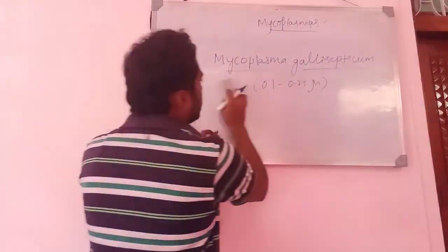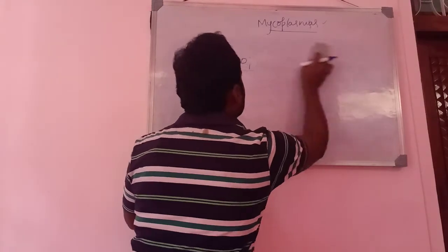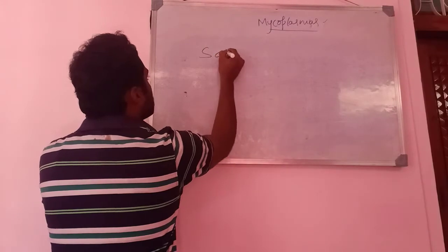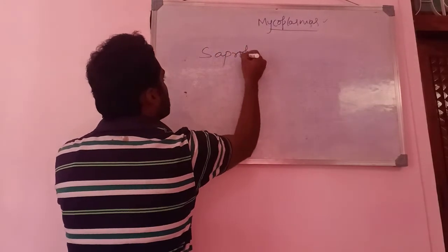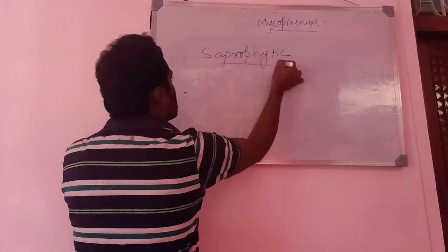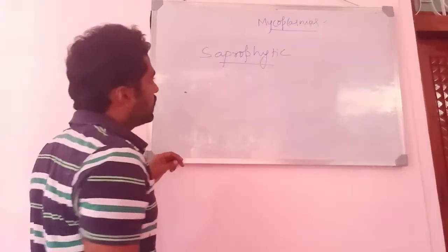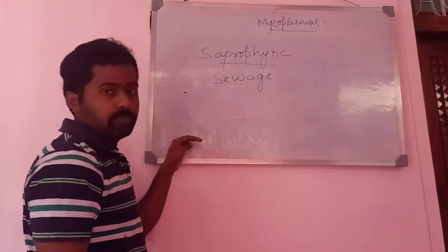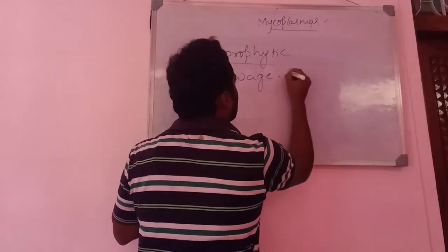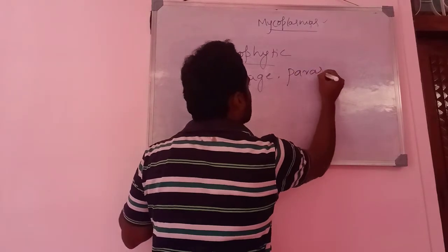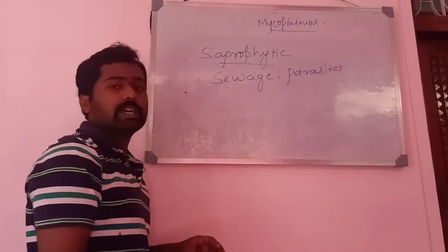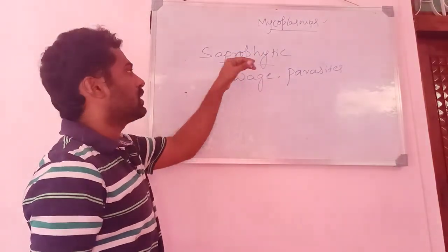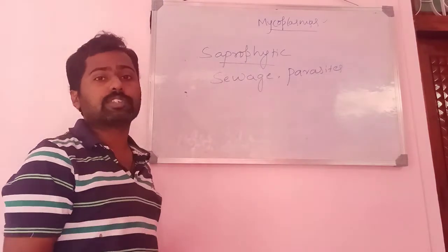Regarding occurrence, mycoplasmas mainly occur in soil as saprophytes, and can also be found in sewage water. They also occur as parasites, causing diseases in plants, animals, and human beings.